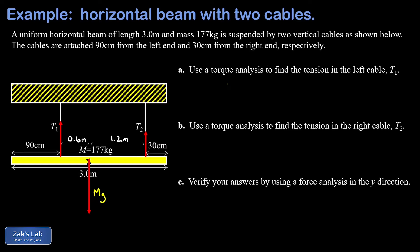In part a, we're asked to use a torque analysis to find the tension in the left cable T1. The key to this is to choose a rotation axis wisely. We're going to analyze the torques about the attachment point of the string T2. If this object is in static equilibrium, then all the clockwise torques better add up to the same thing as all the counterclockwise torques.